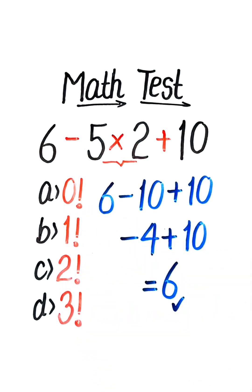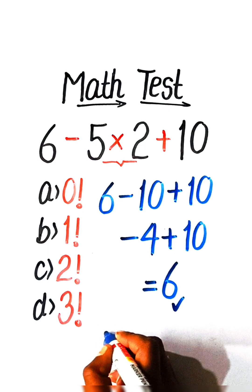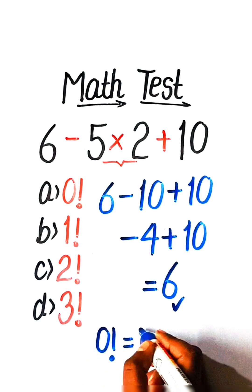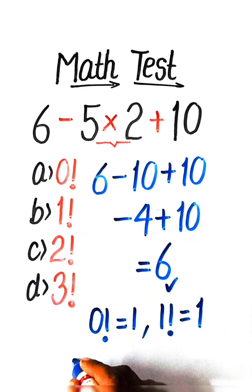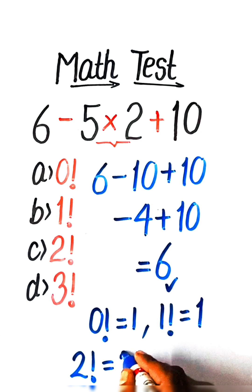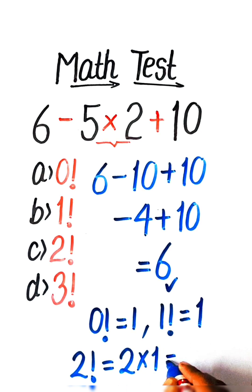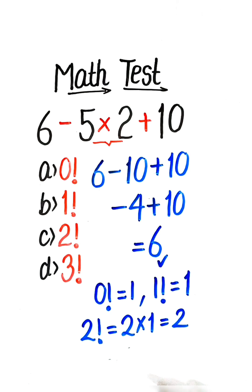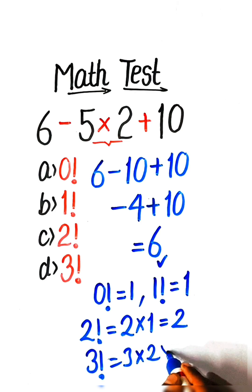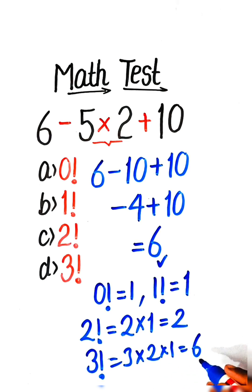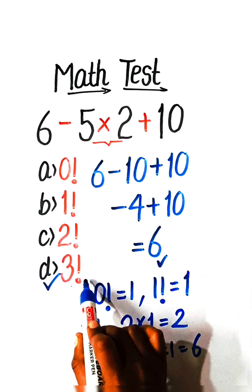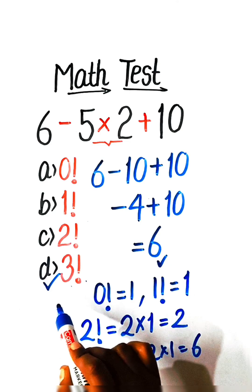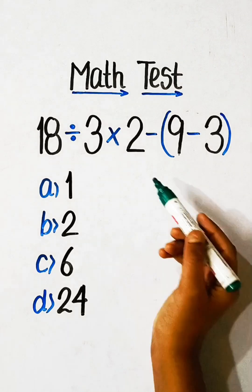But in the options we have all values in factorial, so we will write: value of 0 factorial is 1, value of 1 factorial is 1, value of 2 factorial is 2 multiply by 1 equals 2, and the value of 3 factorial is 3 multiply by 2 multiply by 1 equals 6. So Option D is the correct answer.